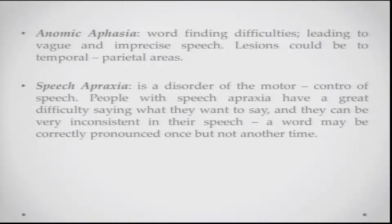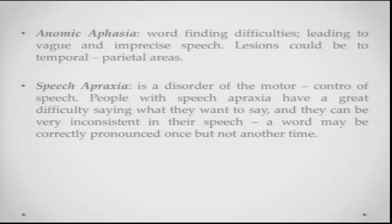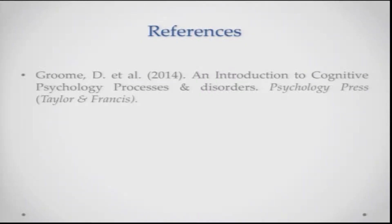Anomic aphasia is linked to word-finding difficulties and naming problems, often leading to vague and imprecise speech, associated with damage to temporoparietal areas. Finally, speech apraxia is a disorder of motor control of speech — people have great difficulty saying what they want because they cannot plan and execute speech. They are very inconsistent: a word may be correctly pronounced sometimes, but the next time they cannot execute the movement associated with that word's production. That is all from me on aphasias — I have tried to give you a flavor of problems associated with language production. Thank you.